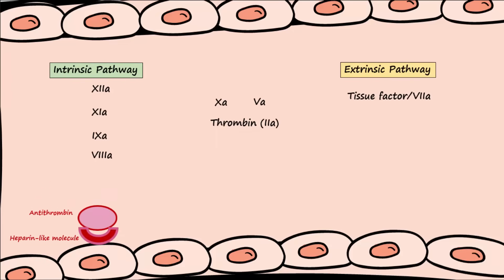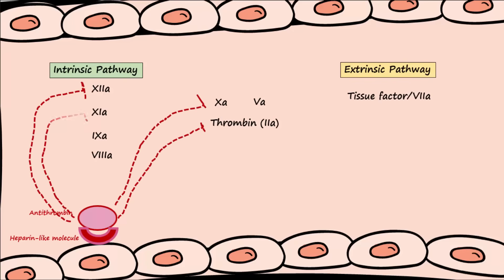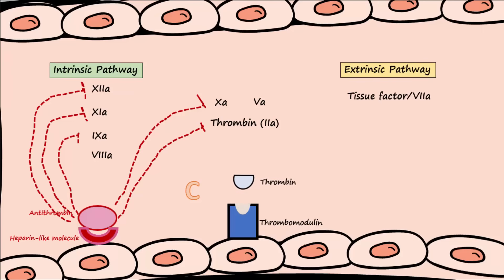Antithrombin becomes activated when it binds to heparin-like molecules expressed by endothelial cells. Activated antithrombin will then inactivate the clotting factors thrombin, factor 10a, factor 12a, factor 11a, and factor 9a.